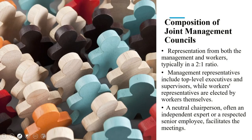The composition of a joint management council includes representation from both management and workers, typically in a two-to-one ratio. Management representatives include top-level executives and supervisors, while workers' representatives are elected by the workers themselves. This setup leads to improved decision-making, more workable and efficient solutions, and ultimately increased productivity, as a peaceful work environment invariably increases output and efficiency.